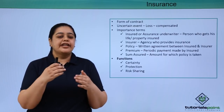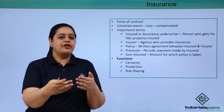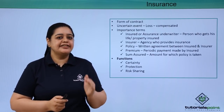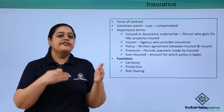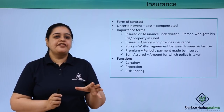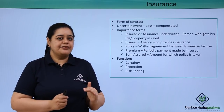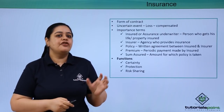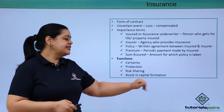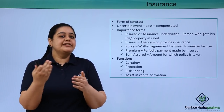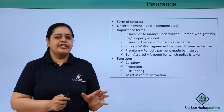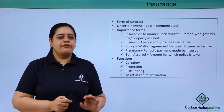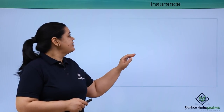The third function is risk sharing. When you get yourself insured and pay a premium, the policy allows you to claim a certain amount in case of a loss. You are sharing your risk of loss with the insurance company, which reduces the burden of loss from uncertain events. The fourth function is assisting capital formation — insurance companies take the premiums collected and invest them to earn a return, thereby contributing to capital formation.